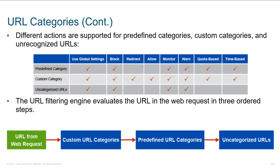Looking at URL categories further, there are different actions supported based on predefined categories. When we see certain types of traffic, what do we want to do? Block it? Monitor it? Send a warning — you probably shouldn't go here, but you can click to continue? It could be quota-based or time-based: you can read about firearm reviews, but you can't do it for more than 30 minutes a day.